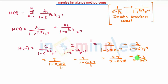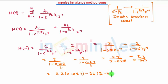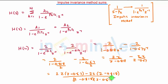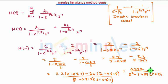Cross multiplying both terms and simplifying: the numerator becomes 2z(z minus 0.67) minus 2z(z minus 0.818), and the denominator is (z minus 0.818)(z minus 0.67). After simplification, we finally get H(z) = 0.29z / (z² minus 1.488z + 0.54). This is the required transfer function for the digital IIR filter. Thank you.